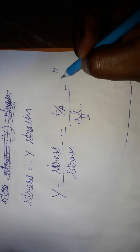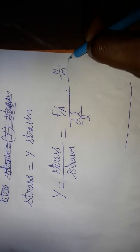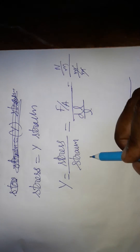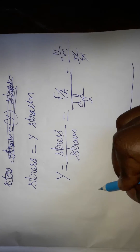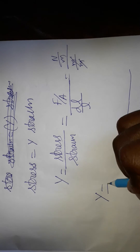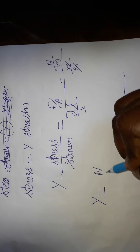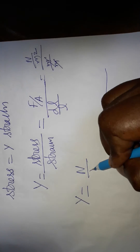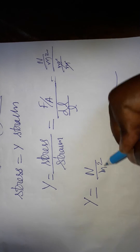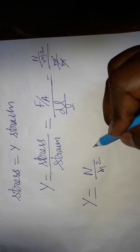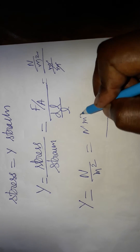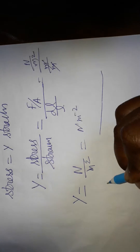The SI unit for stress is Newton per meter square. Strain is meter by meter, which cancels out, so strain is dimensionless. Therefore, the SI unit for modulus of elasticity is Newton per meter square, which can also be written as Newton meter inverse.